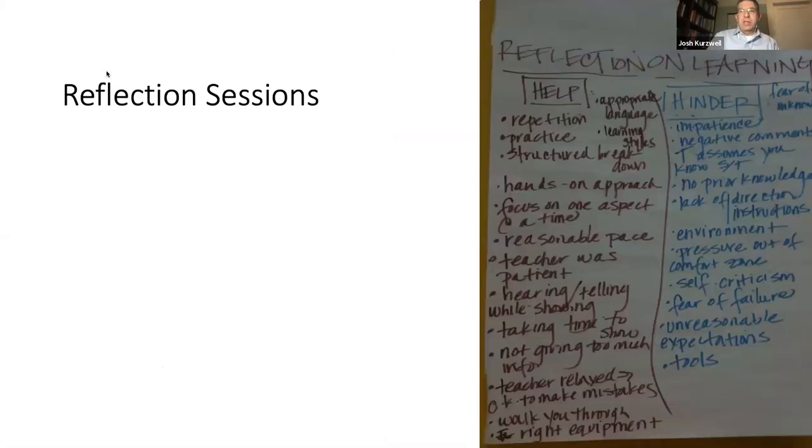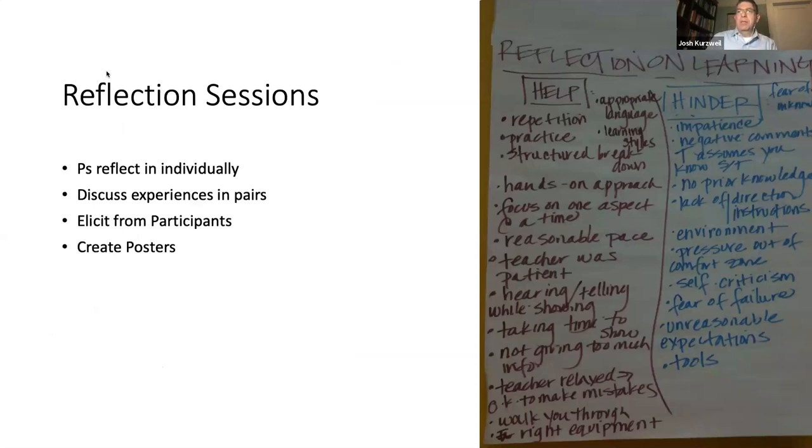In the reflection sessions, you get them talking in pairs about their experiences. They think individually, discuss it in pairs. And then we often elicit from the participants and create posters. This is a poster Jen White wrote. I recognize your handwriting from Berkeley. You can see there are factors that affect learning, repetition or impatience or things that could hinder learning. One of the things that comes out is that something that might help one person learn might hinder another person's learning, which is interesting. In this way, we sort of co-construct theories about learning. I think it could be a very powerful experience and really sets the foundation for the course.